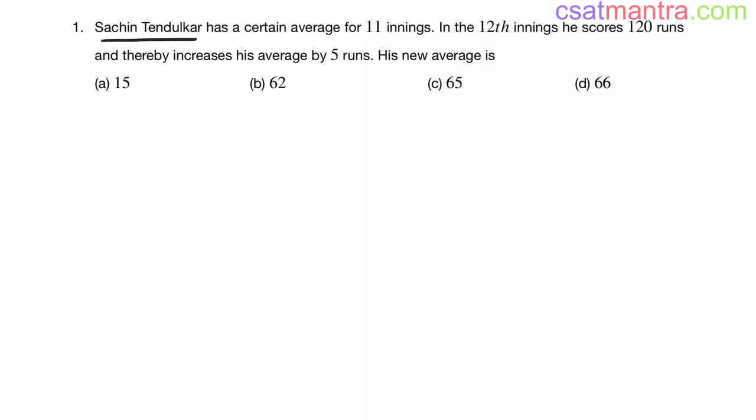Sachin Tendulkar has a certain average for 11 innings. In the 12th innings, he scores 120 runs and thereby increases his average by 5 runs. His new average is?